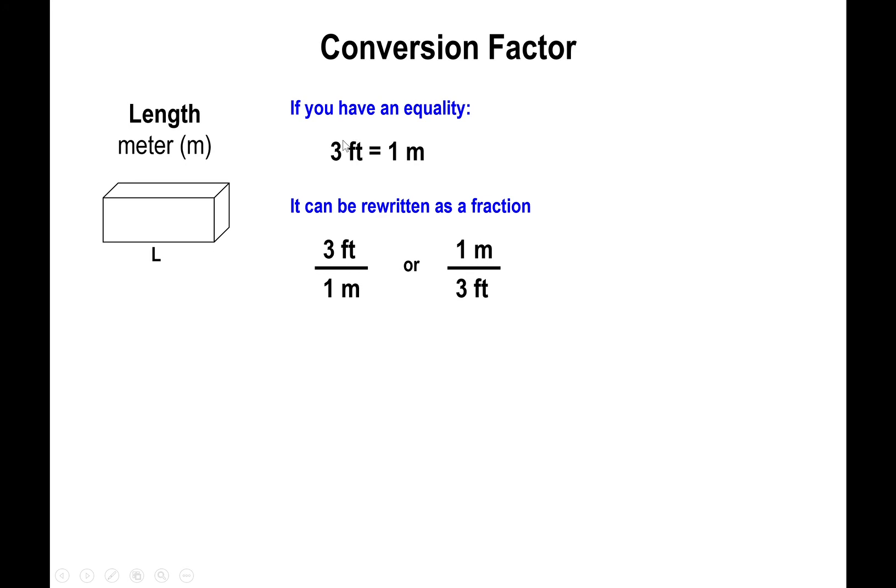As a result, you can write what we call a conversion factor. The conversion factor is the rewrite of this equality in terms of a fraction. You could have the three feet on top of the fraction and the one meter on the bottom, or you could have the one meter on top of the fraction and the three feet on the bottom.